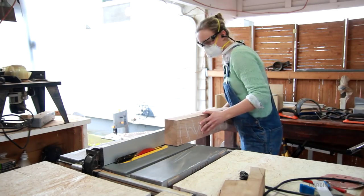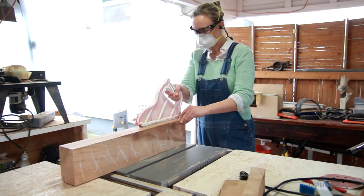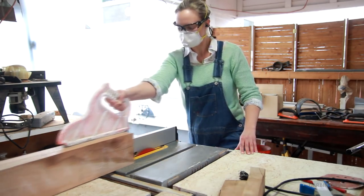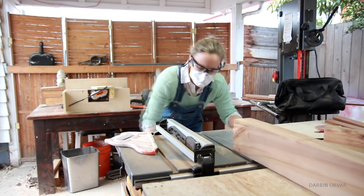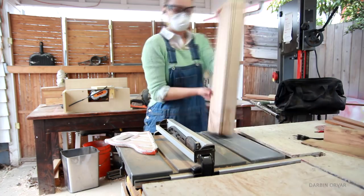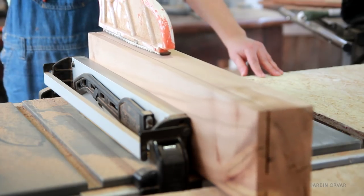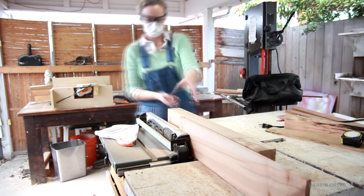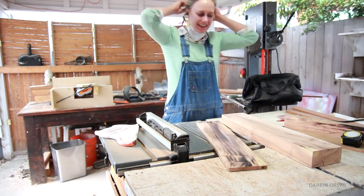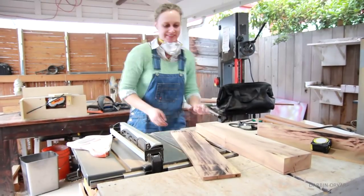Then out to the table saw to do some resawing. Since this wood is really hard and dense, I'm cutting it a little at a time here. And there's a nice piece of stock. And I'm going to let the wood relax for a couple of hours.